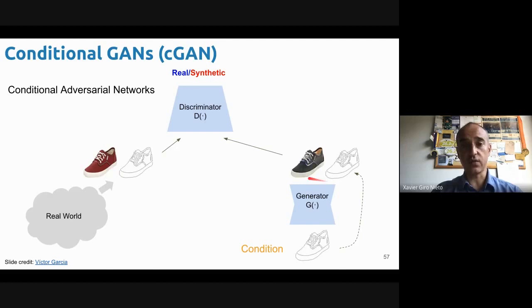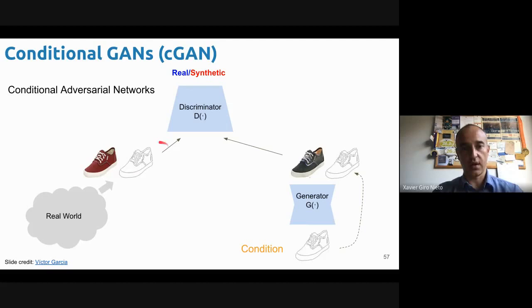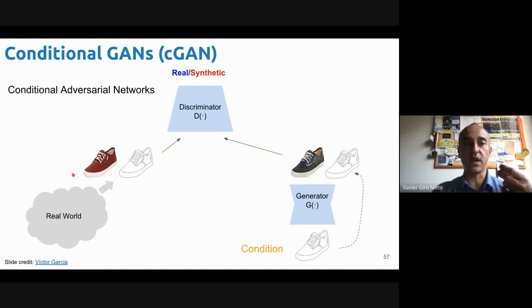If we train with conditional GANs, we need pairs for both the real training data and the generator. For the discriminator, we will not only be showing the real or generated sample, but also showing it the conditioning data. So we will also evaluate if the match is correct. If you have a sample that looks very realistic but doesn't match the condition, the discriminator will also penalize that. This way the generator will learn not only to generate realistic samples — realistic shoe designs — but also shoe designs that match the condition.